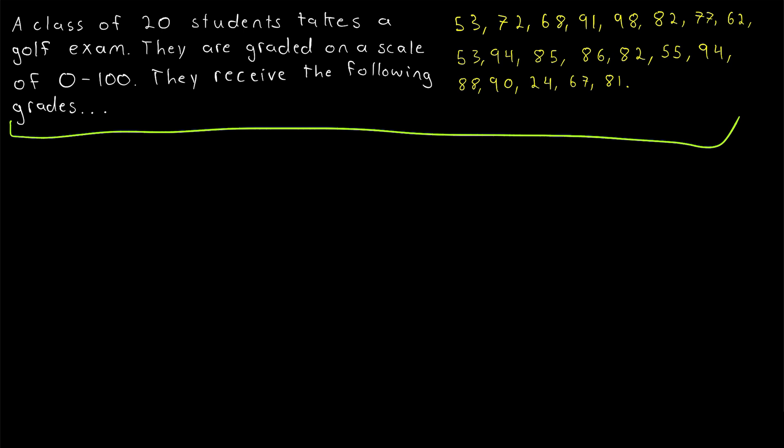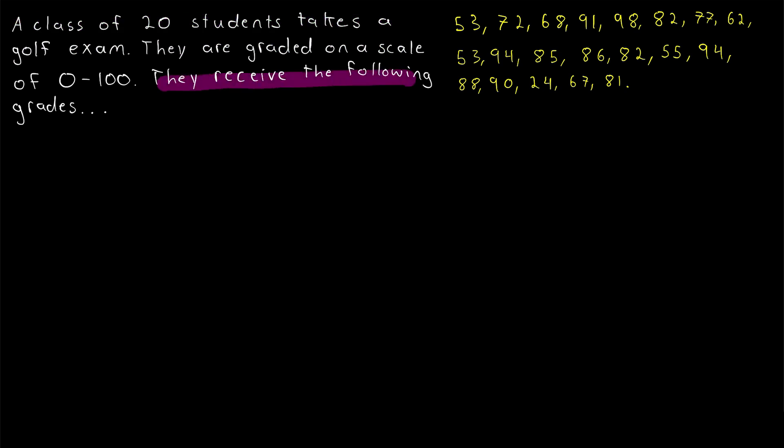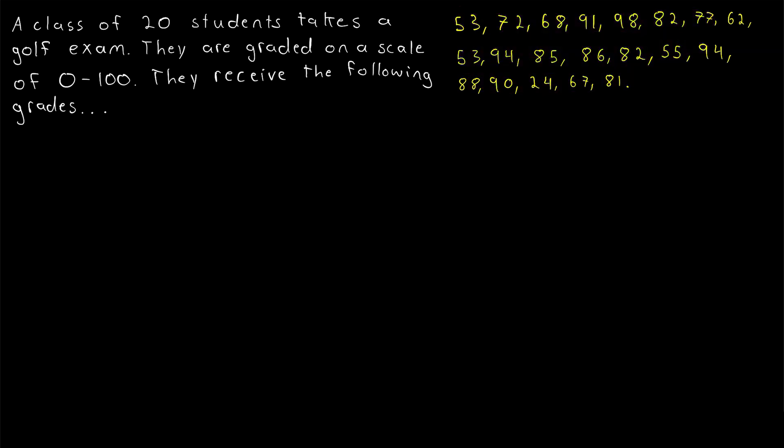Let's take a look at the data we're going to construct a relative frequency table for. A class of 20 students take a golf exam. They're graded on a scale of 0 to 100, pretty normal. They receive the following grades, and of course, we've got 20 students, so the 20 grades are listed over here in yellow. You might wonder what sort of class has to take a golf exam. Well, when I was in high school, my gym class had to take a golf exam. I absolutely bombed it, so this is first-hand experience.